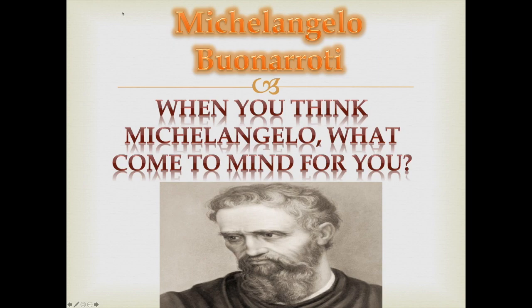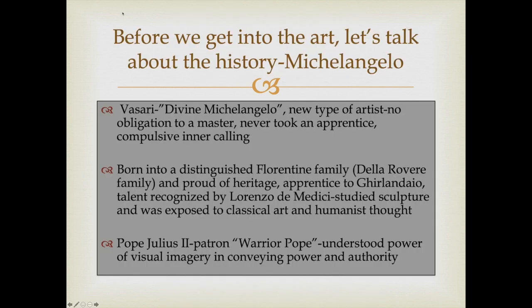As Michelangelo became more established, he continued working to help pay off his brother and father's debts. His mother died when he was relatively young. He started as a sculptor and later came into his own as a painter, eventually shifting from Florence to Rome to receive major commissions from various popes. Vasari — considered the very first art historian — called him 'the divine Michelangelo.' Vasari is also the writer who gave the term 'Gothic' to Gothic-era architecture because he thought it was overdone.